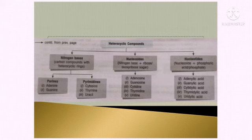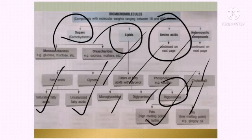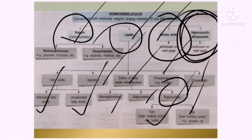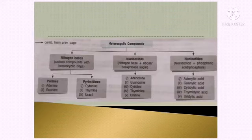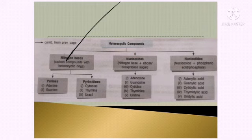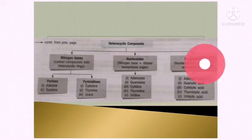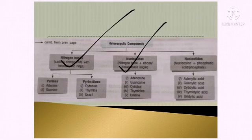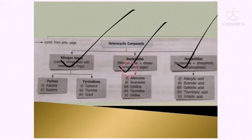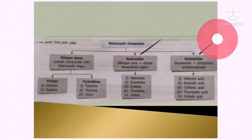We have now covered sugar, lipids, and amino acids. Moving on to the fourth type of biomicromolecule: heterocyclic compounds. These can be divided into three types. The simplest are nitrogenous bases. When nitrogenous bases combine with sugar, they form nucleosides — a bit more complex. When nucleosides combine with a phosphate group, they become nucleotides — the most complex.